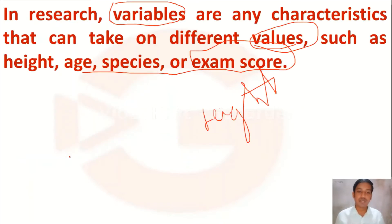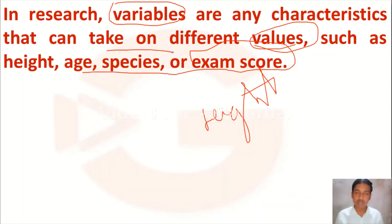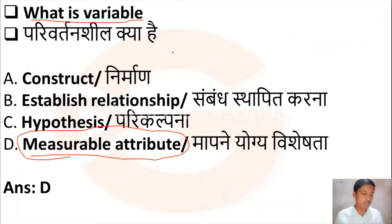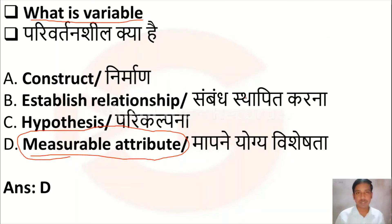Option D — measurable attribute — is the correct answer, because variables are any characteristics that can take different values which we are able to measure. A hypothesis is a tentative statement, and an established relationship refers to the relation between two variables.